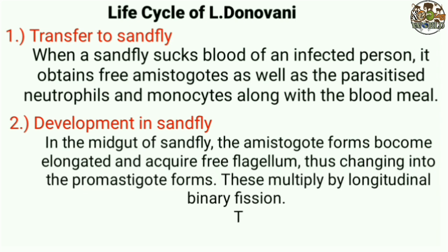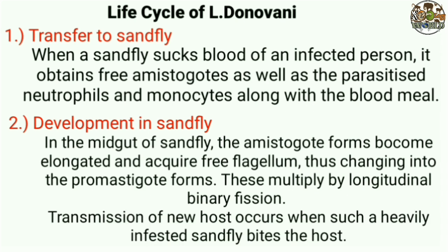Development in the sand fly occurs in the midgut, where the amastigote forms become elongated and acquire a free flagellum, thus changing into the promastigote forms. These multiply by longitudinal binary fission.